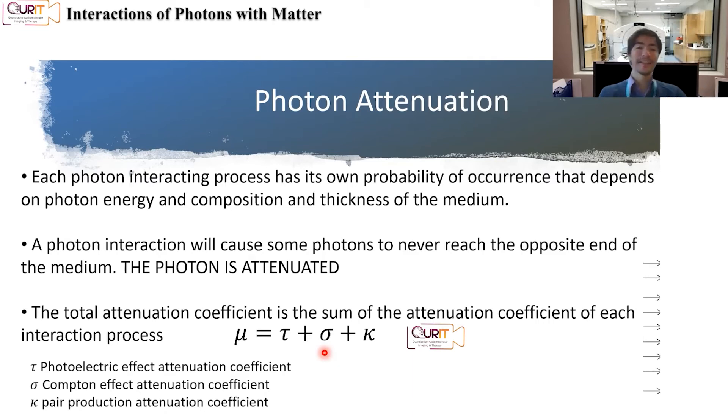So each of the different processes of interactions for photons that occurred has its own probability of happening. So the total attenuation coefficient mu is basically the sum of those independent attenuation coefficients for each interaction process. So it would sum the probability of interaction for photoelectric plus the probability of interaction by Compton plus the probability of interaction of pair production will give you the total mu.